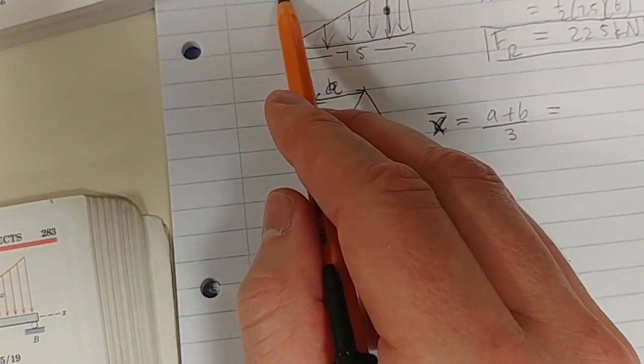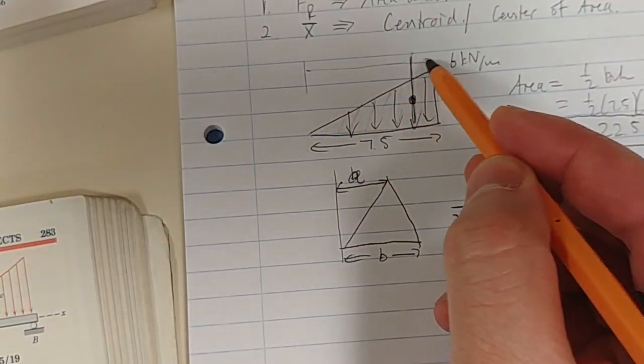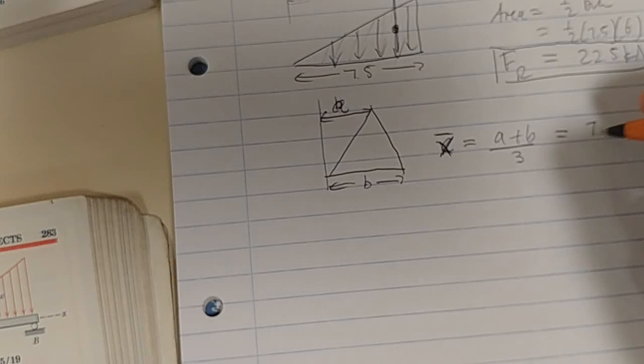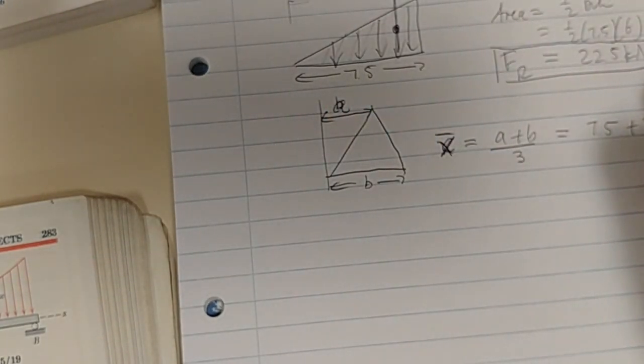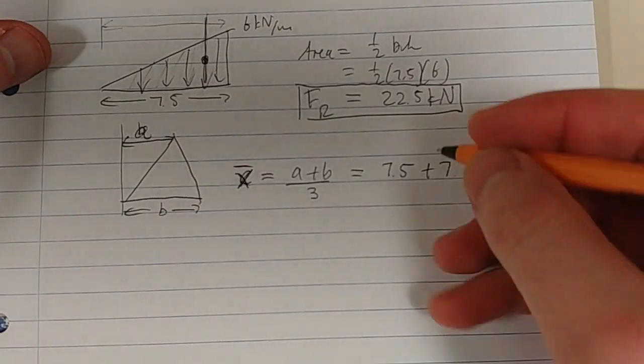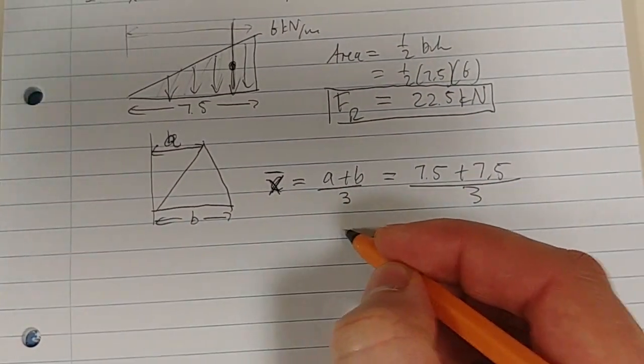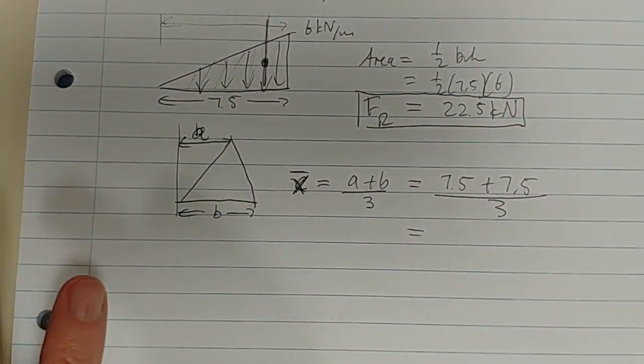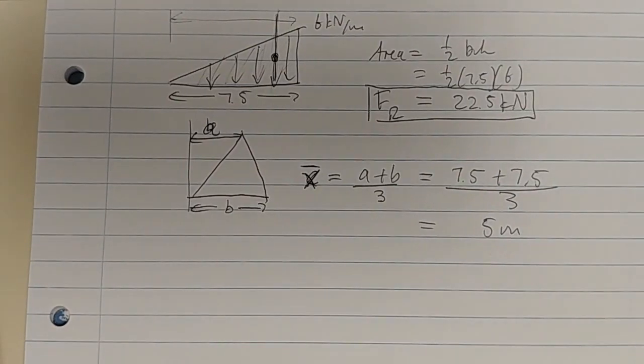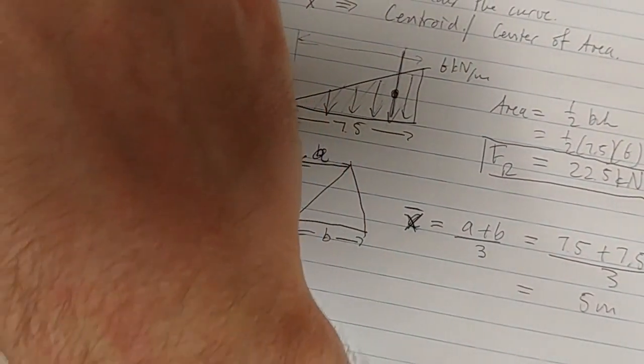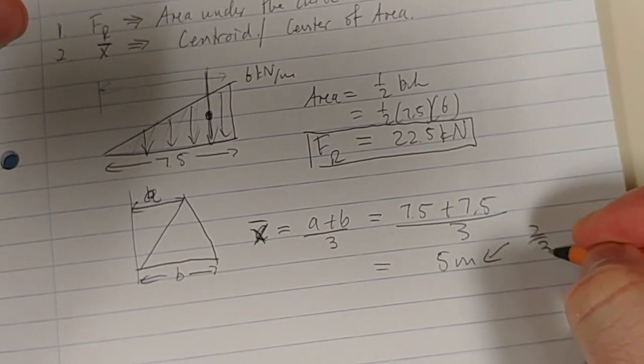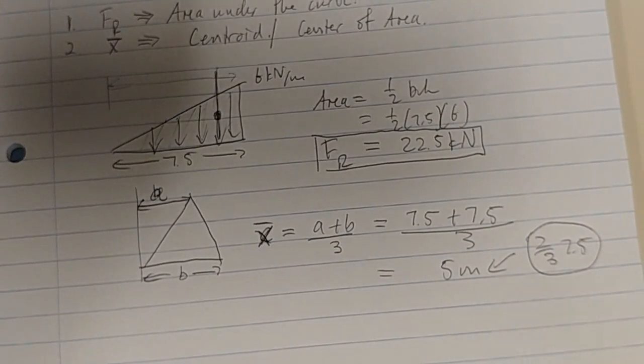When we look here, what is A? A is going to be this length here, which is 7.5. And B is going to be 7.5 as well. 7.5 divided by 3. That should equal 7.5 times 2 divided by 3, which is 5. So what do you notice? This 5 is 2/3 of 7.5.